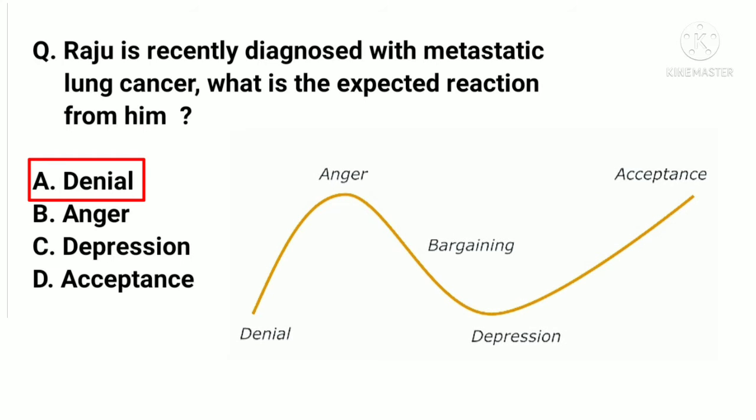According to the Kübler-Ross stages of grief process, the first reaction will be denial. Raju will not accept the fact that he has metastatic lung cancer. Kübler-Ross stages of grief include denial, anger, bargaining, depression, and acceptance.